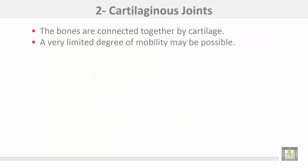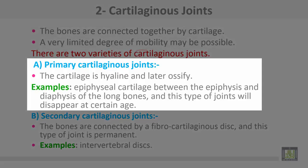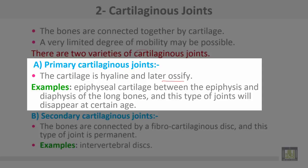Cartilaginous joints connect bones by cartilage and have a very limited degree of mobility. There are two varieties. Primary cartilaginous joints contain hyaline cartilage that later ossifies, known as epiphyseal cartilage — for example, between the epiphysis and diaphysis of the long bones. This type of joint disappears at a certain age.